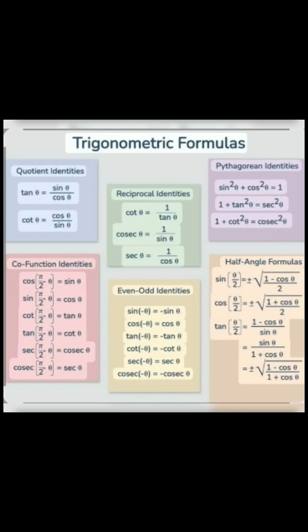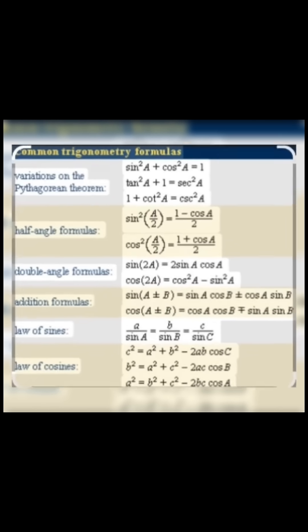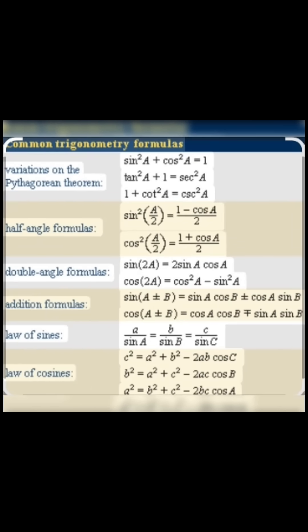sin² θ + cos² θ = 1. 1 + tan² θ = sec² θ. 1 + cot² a = cosec² a. sin²(a/2) is equal to (1 − cos a) upon 2. cos²(a/2) is equal to (1 + cos a) upon 2.